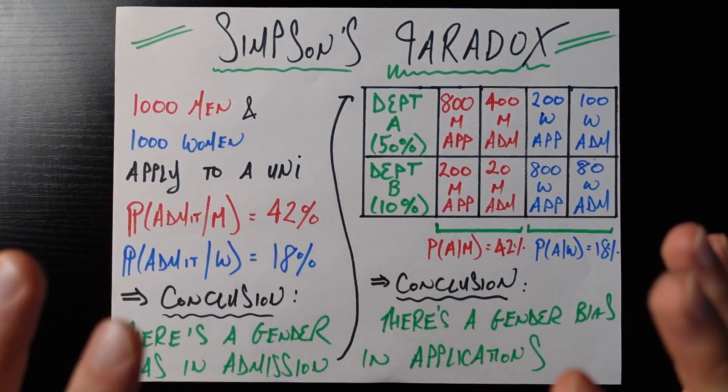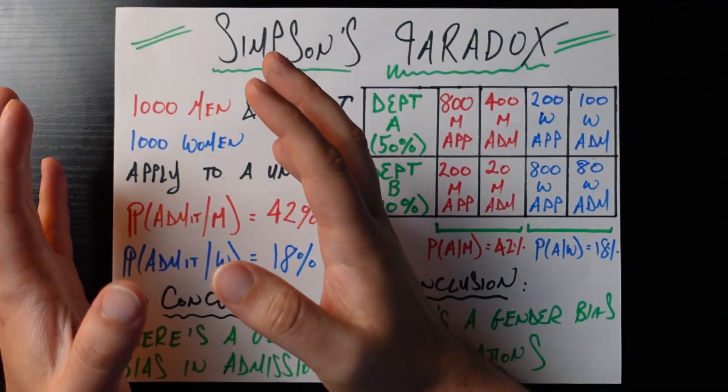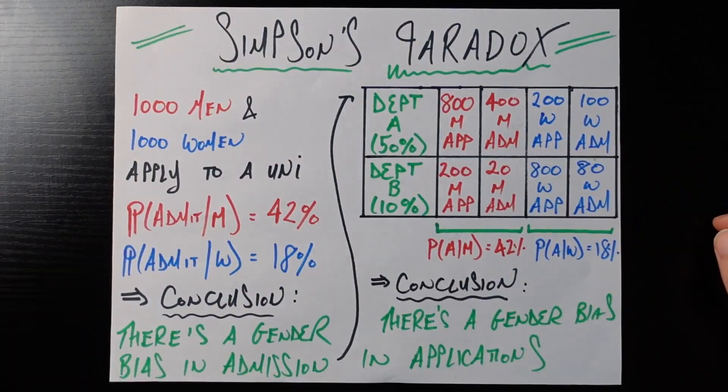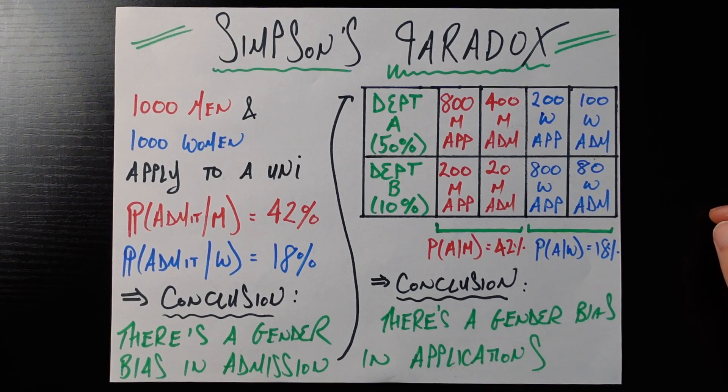And so this is one of the primary examples of Simpson's paradox, which is that looking at data zoomed out paints a very different picture than looking at data zoomed in. And if we're not careful and don't do our homework and only look at one or the other, then we can draw incomplete conclusions.